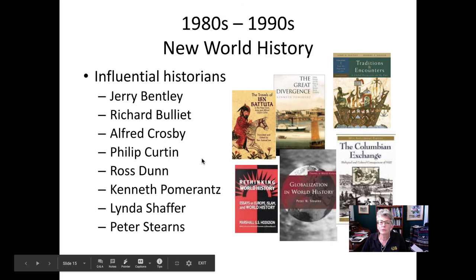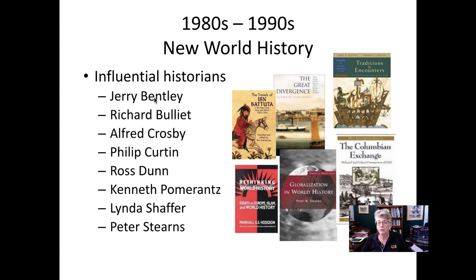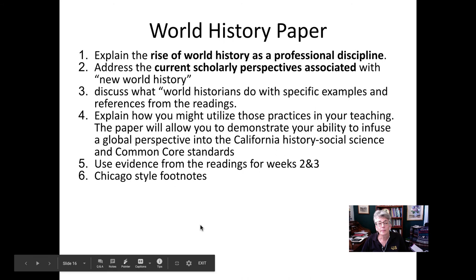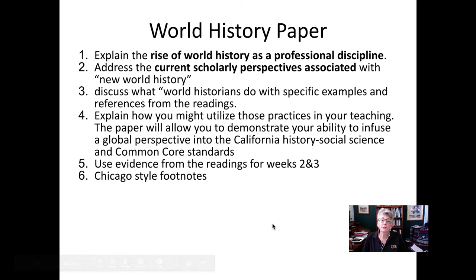Some influential historians we will be reading include Jerry Bentley, which you read for this week, Ross Dunn, Linda Schaefer next week, and Peter Stearns. Our paper, due next week before class, asks you to explain the rise of world history as a professional discipline and address current scholarly perspectives associated with New World history — what we just talked about: transregional, cross-cultural, things not limited to national borders. Immigration and the patterns of people moving is an example of a scholarly perspective associated with New World history.